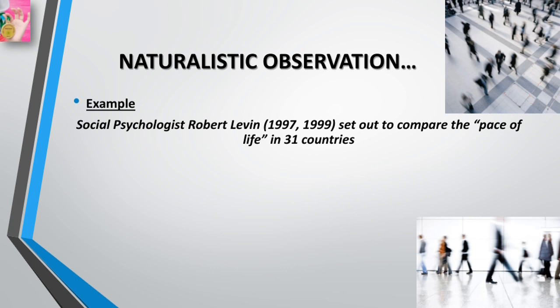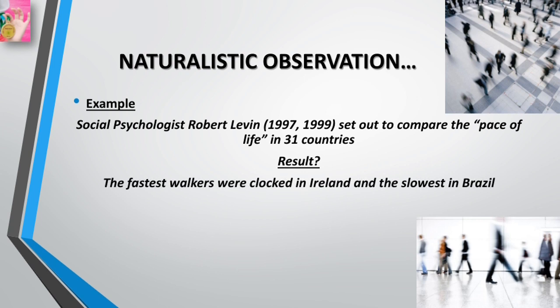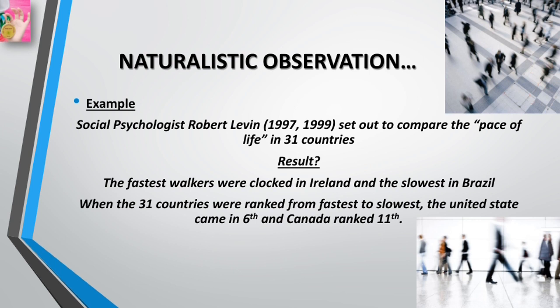Psychologists carefully define the behaviors they will observe before beginning research. For example, social psychologist Robert Levine in 1997 and 1999 set out to compare the pace of life in 31 different countries. One measure he adopted was the time it took a pedestrian to walk 60 feet on a downtown city street. Observers unobtrusively timed at least 35 male and 35 female pedestrians in each country. The fastest walkers were in Ireland and the slowest in Brazil. The United States ranked 6th and Canada 11th.